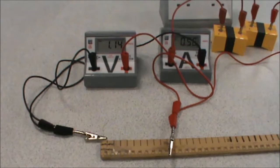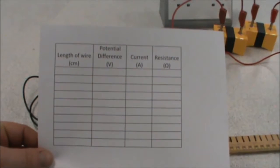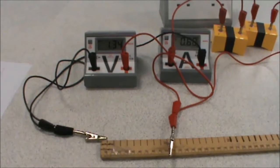These are going to be recorded in our results table that looks like this. Now, in order to plot a graph, we're going to need a minimum of 8 points, preferably 10, and seeing as how we're working with a meter, we can go up in 10 centimeter steps from 10 to 100 centimeters.